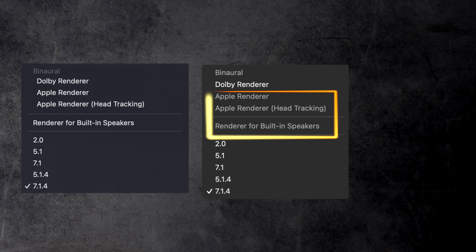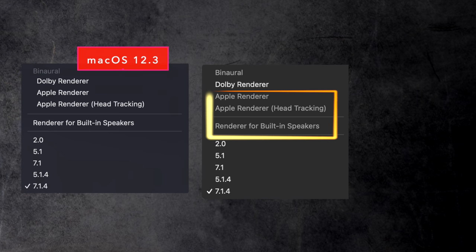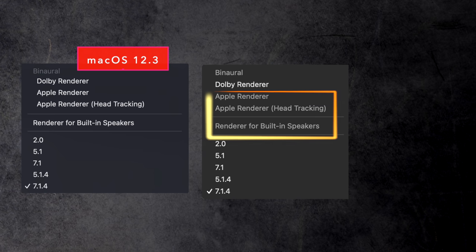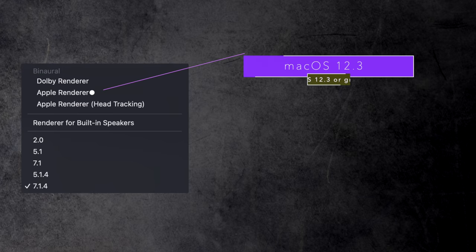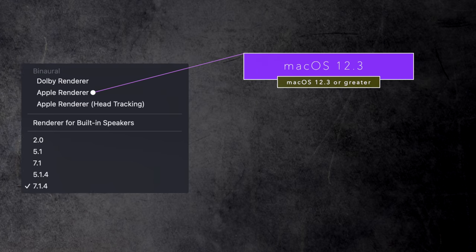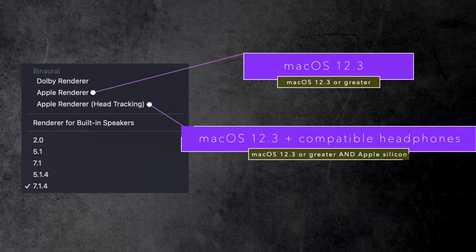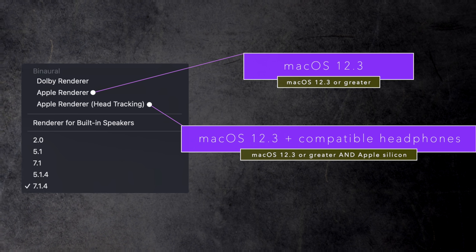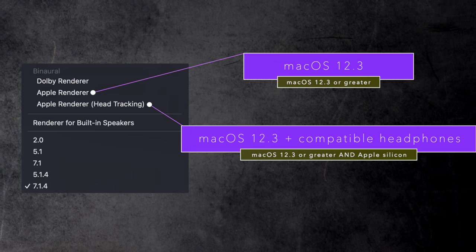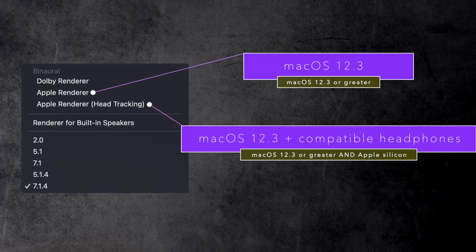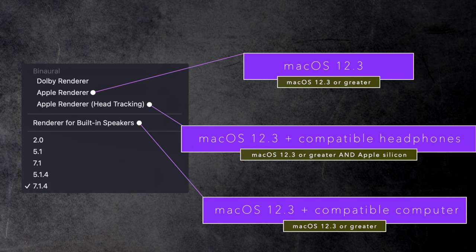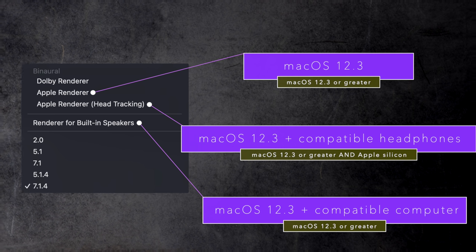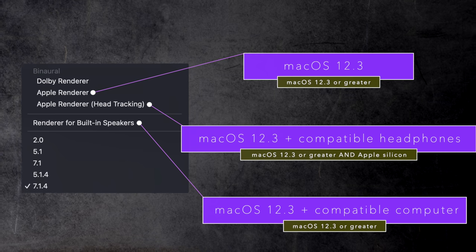These new options are only available if you have updated to macOS 12.3. The Apple Renderer option requires a minimum of macOS 12.3. Apple Renderer Head Tracking requires macOS 12.3 and a head tracking device like AirPods Pro selected as your audio device in Logic Pro. The Renderer for Built-in Speakers option requires macOS 12.3 and a newer Mac capable of playing spatial audio through its speakers.